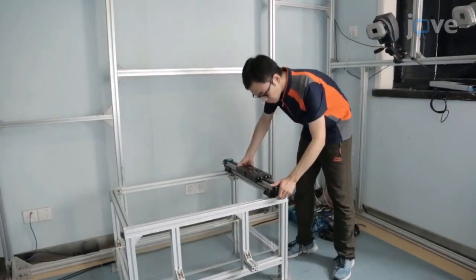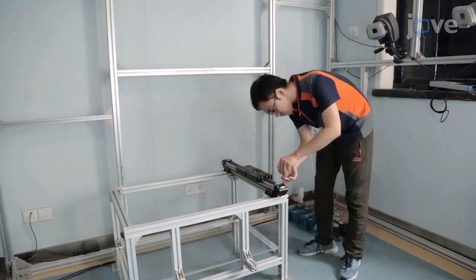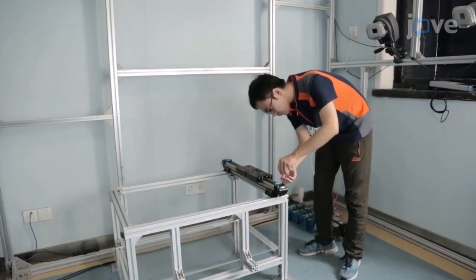Begin by fixing two Y-rails onto the top surface of the frame in parallel by securing the pedestals to the top surface with screws.